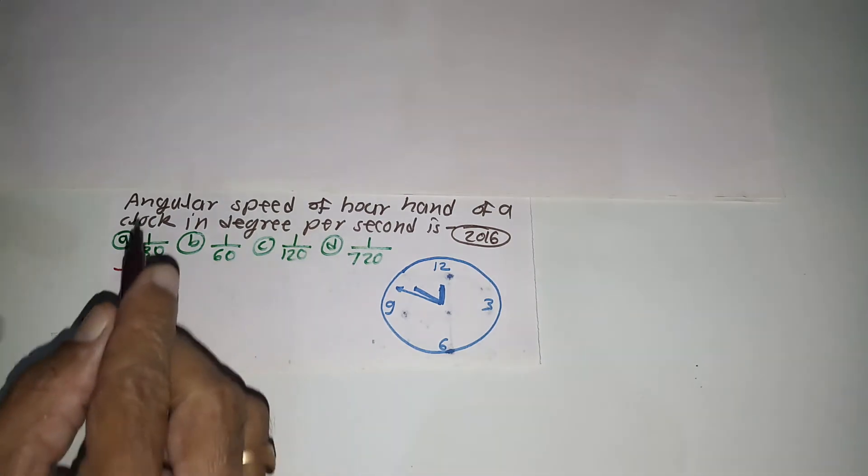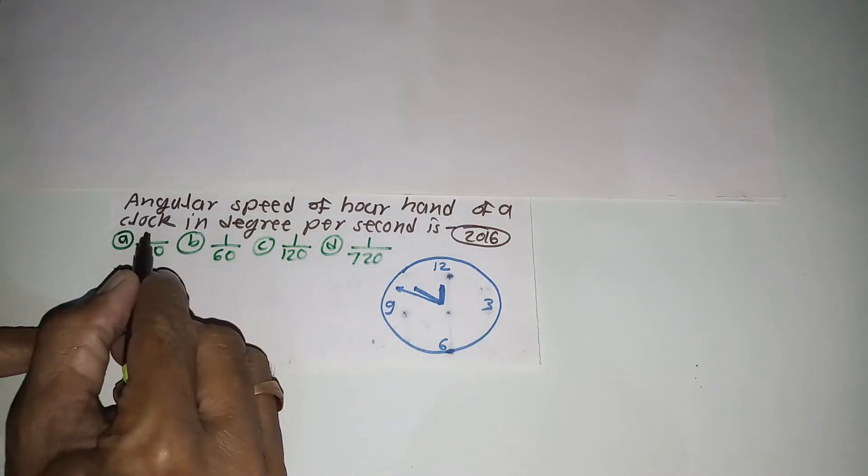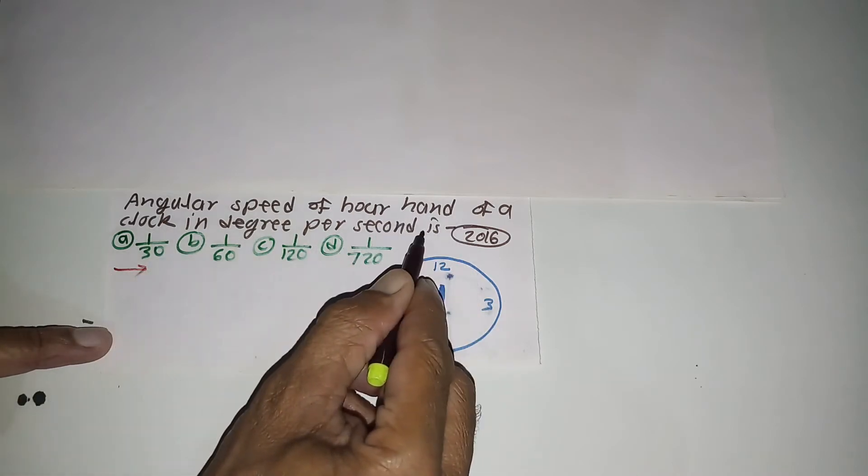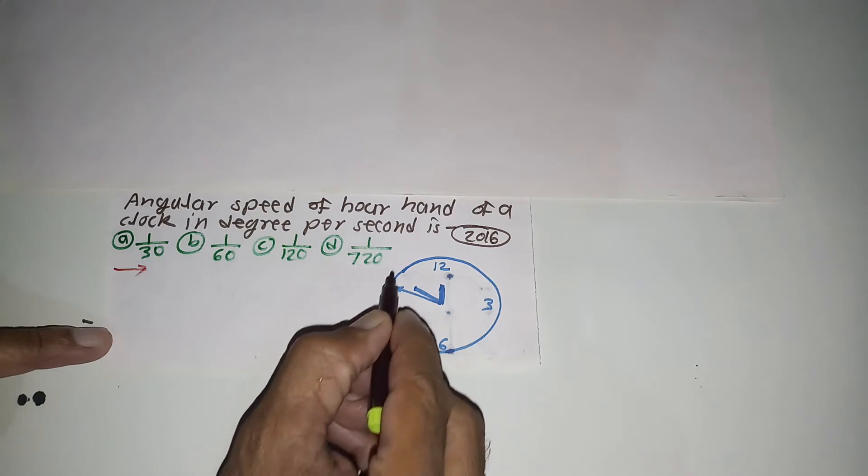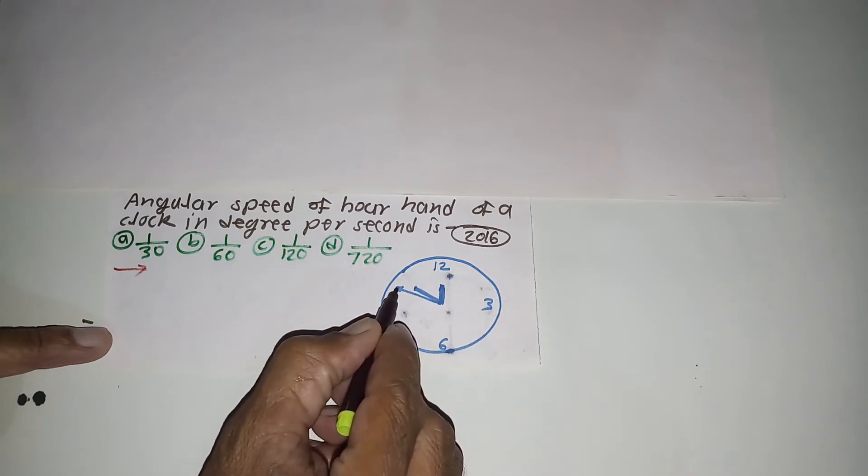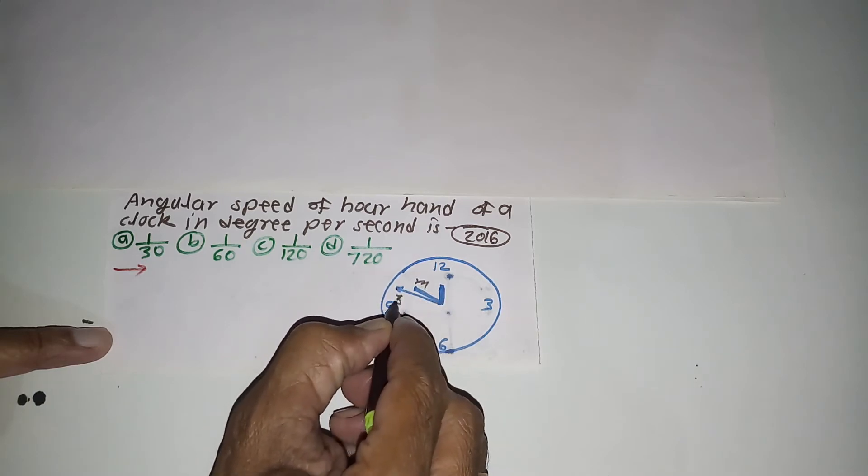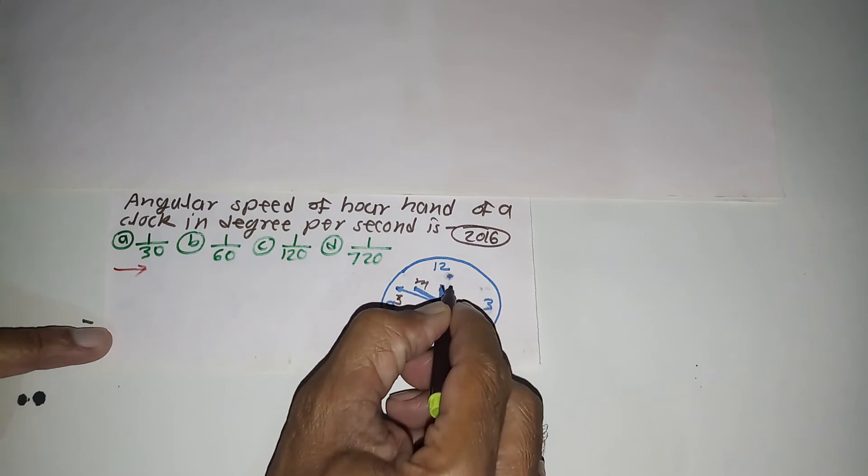Here, angular speed of hour hand of a clock in degree per second. In the clock we have three hands: one hour hand, one minute hand, and one second hand. When we have our hour hand, we have its tip.